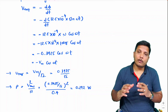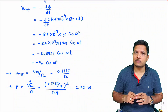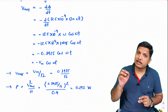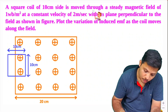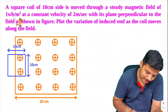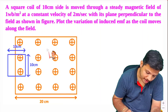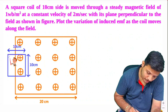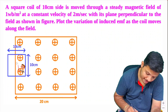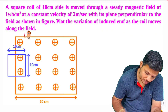Now I will explain a very tricky question based on Faraday's law. Based on this question, I think you can solve any question on Faraday's law of magnetic induction. A square coil of 10 centimeter side is moved through a steady magnetic field of 1 Weber per meter square at constant velocity 2 meter per second, with its plane perpendicular to the field as shown in the figure. The magnetic field shown in pink is perpendicular to the plane of the page, and the square coil is moving with constant velocity 2 meter per second. We are required to plot the variation of induced EMF as the coil moves along the field.